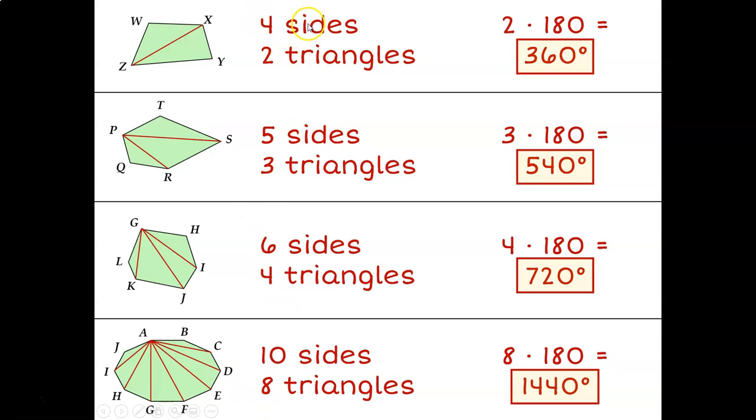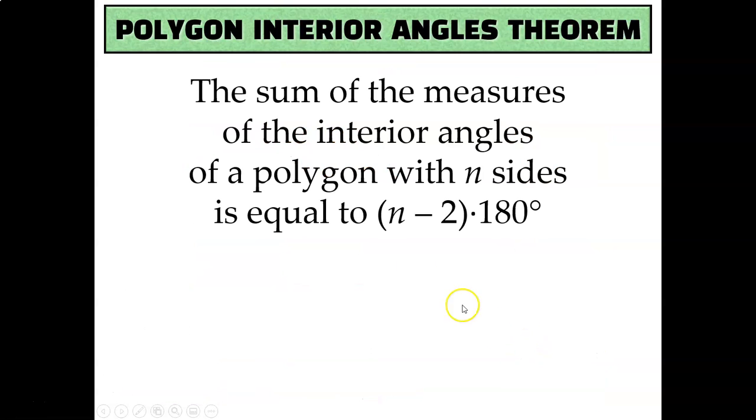So if I just take my number of sides and subtract two, that tells me how many triangles there are. And I know that triangles are worth 180, so I just multiply the number of triangles by 180 to get my answer. And that's all the formula is. You just take n, which is the number of sides that the polygon has, and subtract two from it and multiply it by 180.